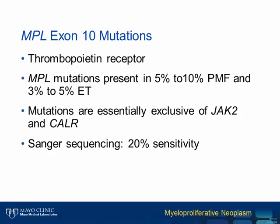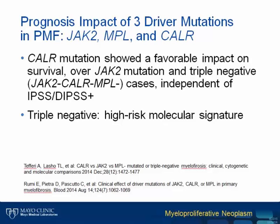The third driver mutation is MPL. The MPL gene encodes for the thrombopoietin receptor, and MPL mutations are present in 5 to 10% of PMF and 3 to 5% of ET cases, commonly detected by Sanger sequencing with 20% sensitivity. Detection of the three driver mutations is not only helpful for diagnosis but also carries prognostic value, especially in PMF, where CALR mutation shows a favorable impact on survival over JAK2-positive and triple-negative cases, independent of the current risk stratification system, and triple-negative mutational status has been proven to be a high-risk molecular signature.